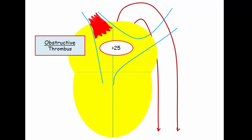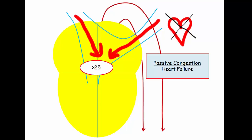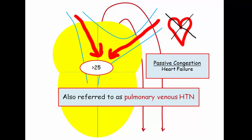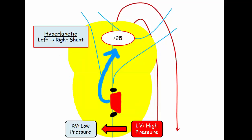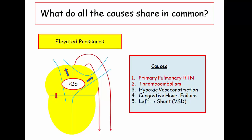Pressures can also be elevated on the basis of vascular obstruction, which is what happens in thromboembolic disease. We can also raise pressures through passive congestion from the left heart. Elevated left-sided pressures seen in congestive heart failure are transmitted back to the right heart—also referred to as pulmonary venous hypertension. Finally, left-sided shunts can cause pulmonary artery hypertension. As depicted with a ventricular septal defect, increased volume and pressure are shunted through a hole connecting the left and right ventricle, raising pulmonary artery pressure. Left-to-right shunts raise pulmonary artery pressures.